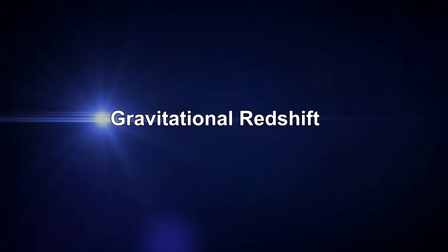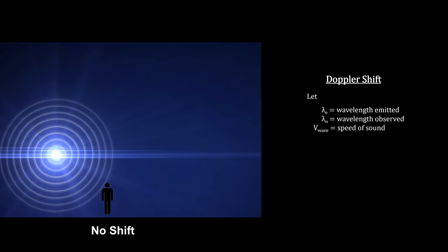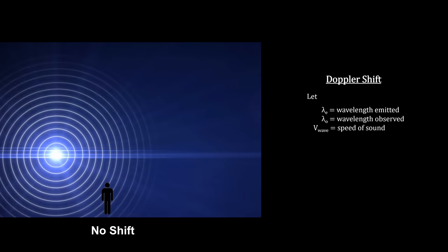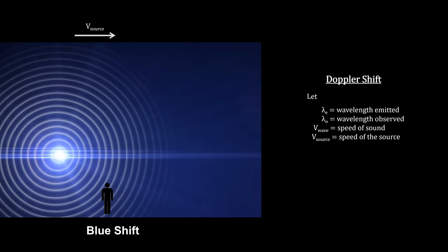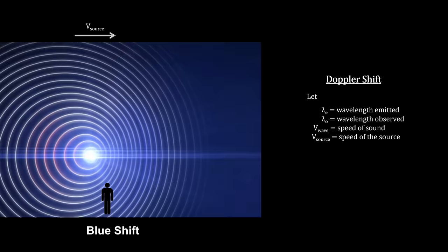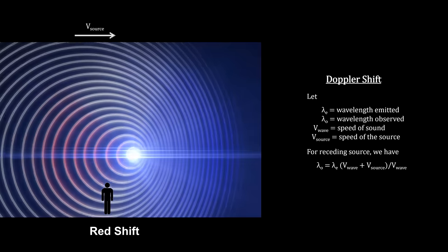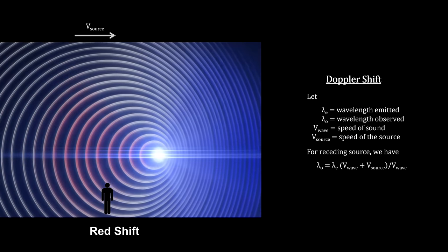The third test of Einstein's relativity theory, proposed by Einstein himself, involved the shifting of light wavelengths to the red in the curved space of a gravitational field. To see how this works, we'll take a minute to review just what redshift is. Most people have had the experience of hearing the pitch of a car horn, train whistle, or ambulance siren drop off as the source moves past. As the sound source moves towards the observer, the sound waves are compressed, making the pitch higher. As the sound source moves away from the observer, the sound waves are stretched out, making the pitch lower.